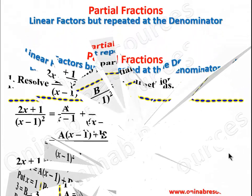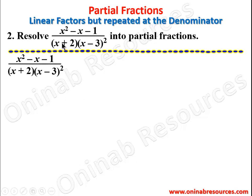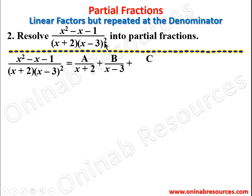Problem two: resolve (x² - x - 1) / ((x + 2)(x - 3)²) into partial fractions. This is a combination of a linear factor not repeated and a linear factor that is repeated. Resolving this, we treat the linear factor as usual and write it as A/(x + 2) + B/(x - 3) + C/(x - 3)².